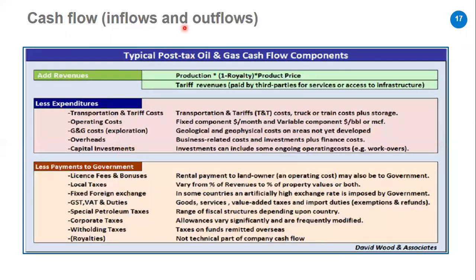The inflow of the project is revenue. Revenue equals production multiplied by (one minus royalty) multiplied by product price. We subtract royalty because this amount is first taken by the government. The remaining is revenue to the investor: production × (1 − royalty) × product price. Sometimes we have infrastructure that another company uses, and they pay a tariff to us — this is also considered revenue, called tariff revenue.